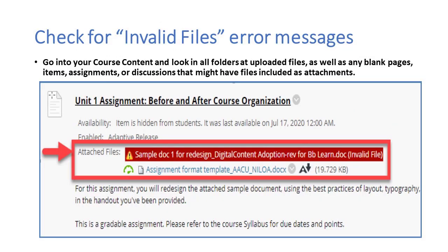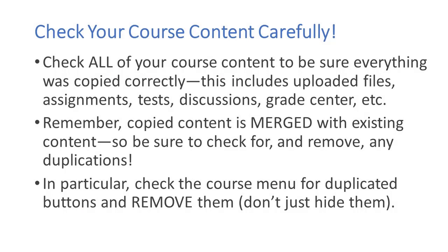The next thing to check is for any invalid file error messages. You'll need to go through your course content very carefully — open up each of the folders and look at any uploaded files, but also look at items or blank pages that had documents attached to them. Also check assignments: make sure that any files attached to assignments don't have invalid file error messages. If you do find any invalid file errors, contact your local college EdTech director. Be sure to check all course content — files, assignments, tests, discussions, grade center columns, etc. Remember, copied content is merged with existing content, so check for and remove any duplications.